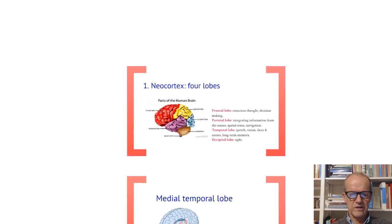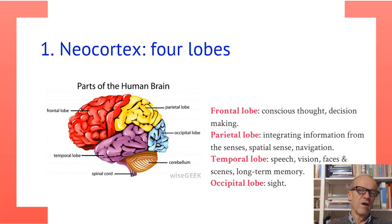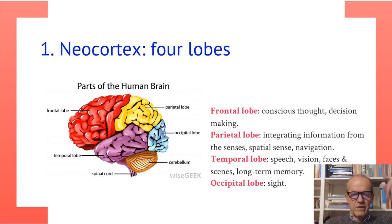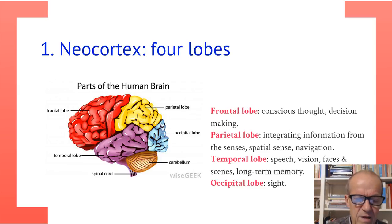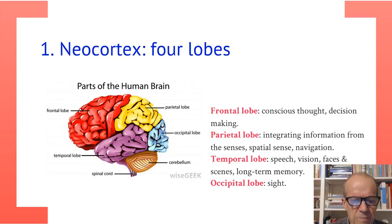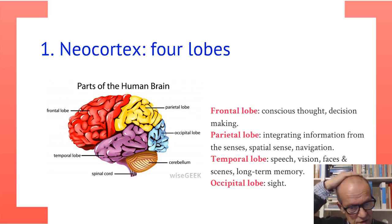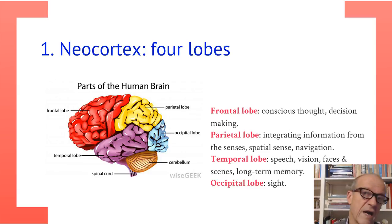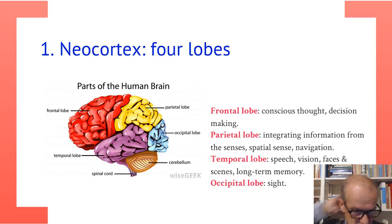The neocortex is the outer part of the brain — a very big area because of all the windings. We have four lobes: the frontal lobe, which is the front part; the parietal lobe; the temporal lobes on both sides; and the occipital lobe at the back, which serves visual information processing functions. And then the cerebellum, which is also a very important part, but not part of the neocortex.